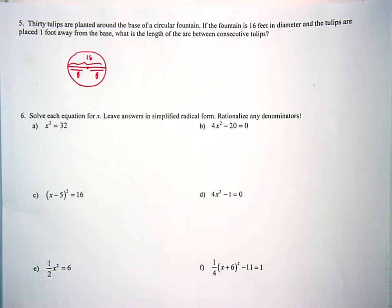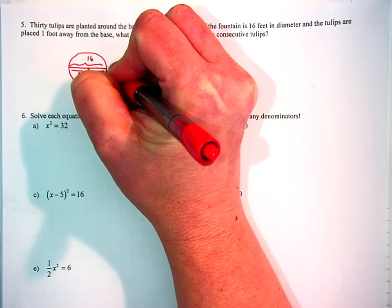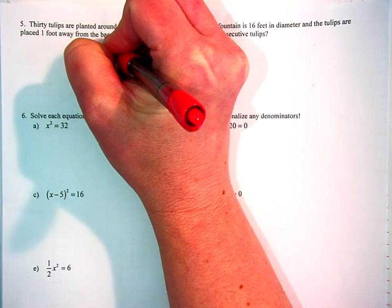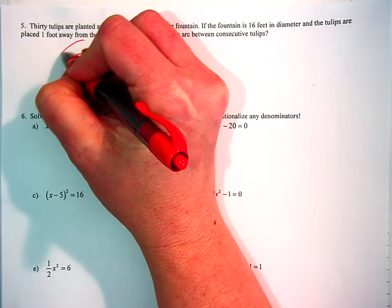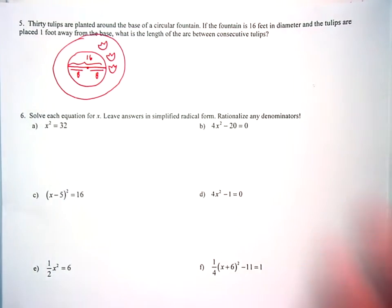So then we're told that we have 30 tulips that are planted around the base. So we have, let me make a beautiful tulip like that. Here's all of those lovely tulips like that that are wrapping around it. And then I'll just draw in that circle.